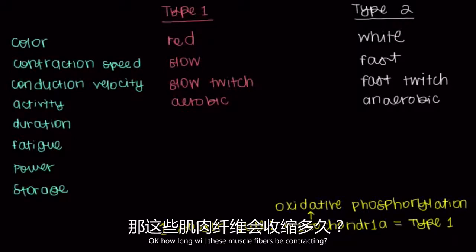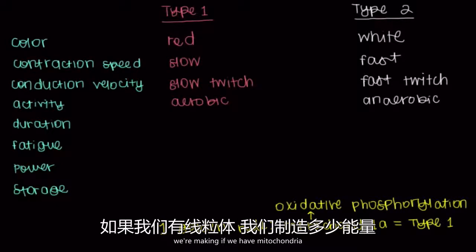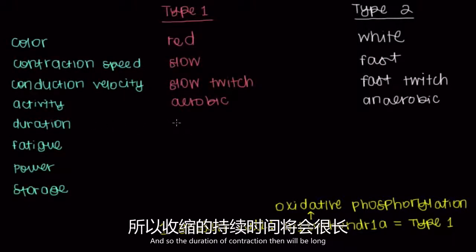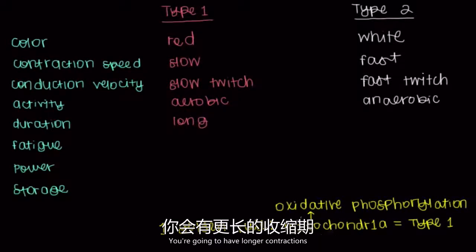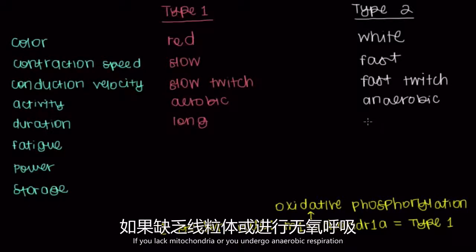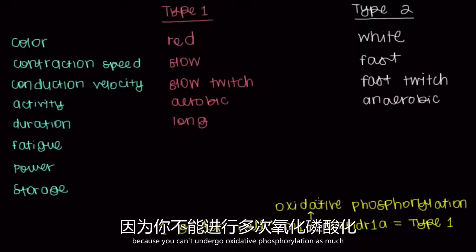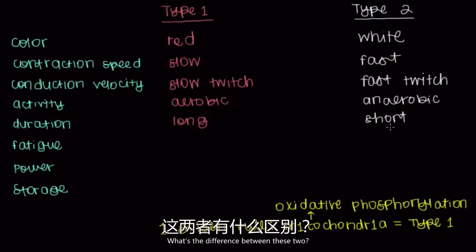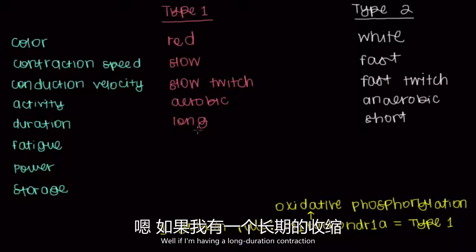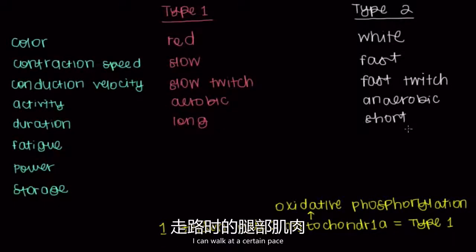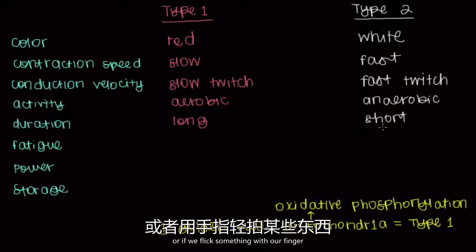How long will these muscle fibers be contracting? If we have mitochondria we make a lot more energy, so the duration of contraction is long for type 1. You'll have longer contractions when you can make a lot more ATP with mitochondria. If you lack mitochondria and undergo anaerobic respiration, you'll have short duration contractions. Long duration is like the muscles in your back and legs for standing or walking; short duration is like the muscles in your arms when shaking hands or flicking a finger.